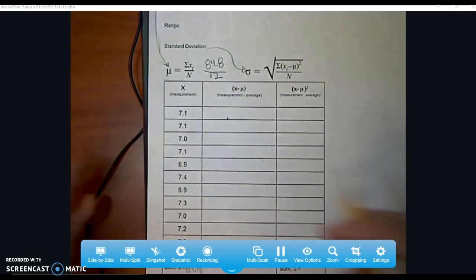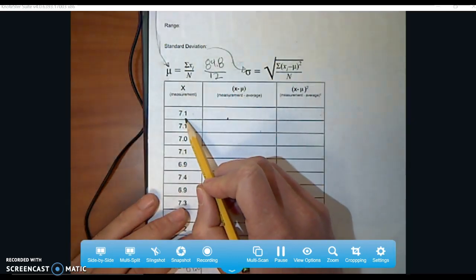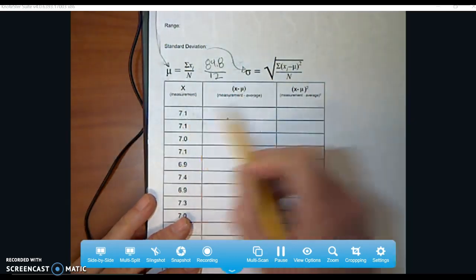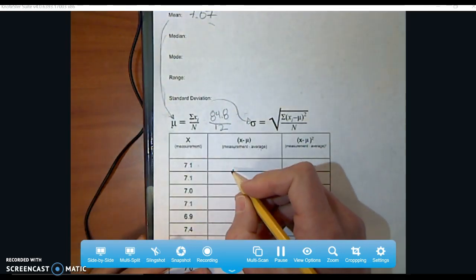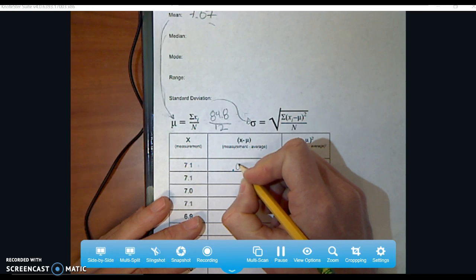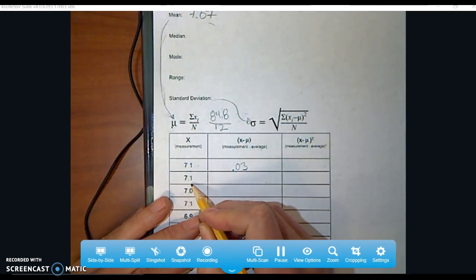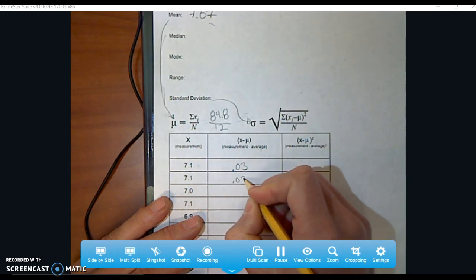Okay. Sorry about that. It was simple. Like I was saying, all you do is do 7.1 and you subtract from it the average, which in this case was 7.07. So when I do that, you can use your calculator if you want. It becomes 0.03.